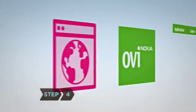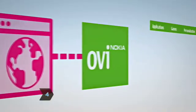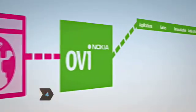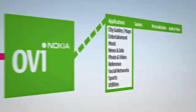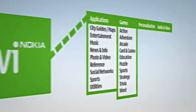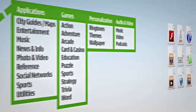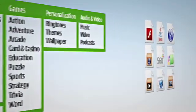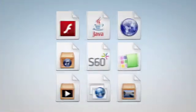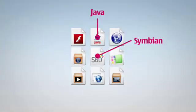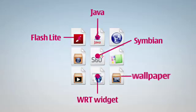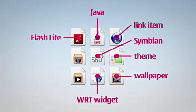Step 4. Start uploading. OviStore accepts a wide range of content in a variety of categories, including entertainment, social networking, productivity, gaming, news and information, and more. Accepted media types include Java, Symbian, and Flash applications, web runtime widgets, wallpapers, themes, and more for supported Nokia Series 40 and S60 devices.